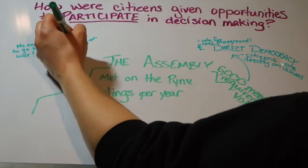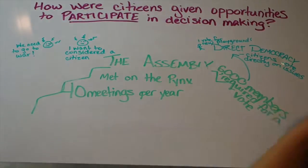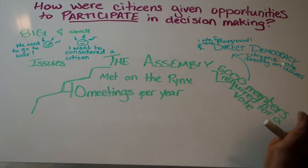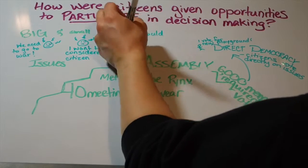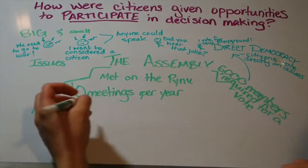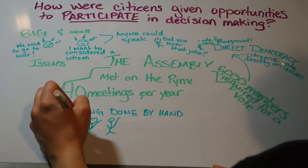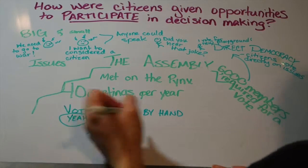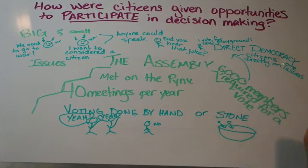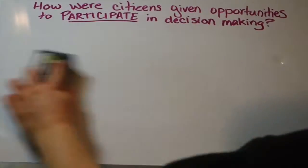The assembly would take in different types of quandaries — whether or not someone wanted to go to war, or if someone wanted to be considered a citizen, which you'll learn more about in the status section. The assembly would look at big or small issues, and anyone could speak. Voting was done by hand — could you imagine doing that with 6,000 members? — or by stones, where they would have a jar or bin and put stones in.